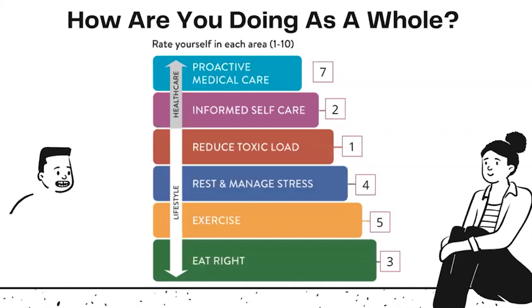On each level, list them on your paper from eat right all the way up to proactive medical care, and in each of these squares rate yourself — one being the worst and ten being absolutely perfectly amazing. In my case I needed a lot of help in eating right because I don't eat vegetables at all, I am a heavy meat eater, so I rated myself a three.